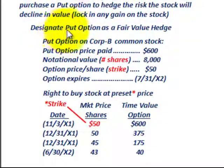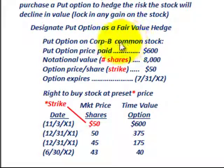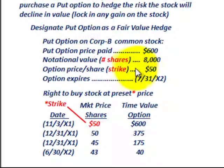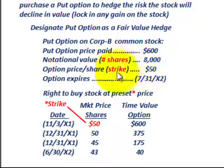We're designating this put option as a fair value hedge. For the put option on Corp B stock, the premium — the price paid — is $600. The notional value, the number of shares they have the option to sell with this put option, is 8,000 shares. The put option strike price per share is $50, and there is also an expiration date.